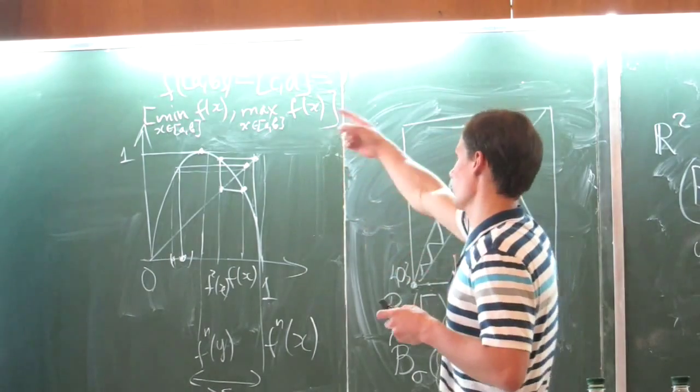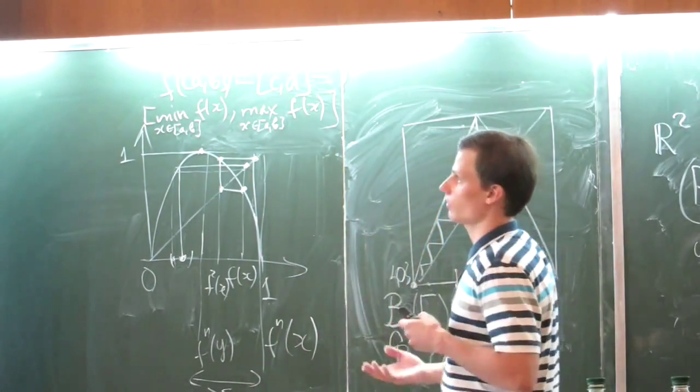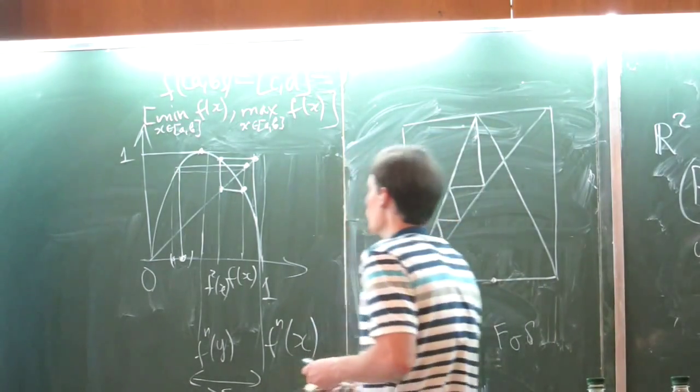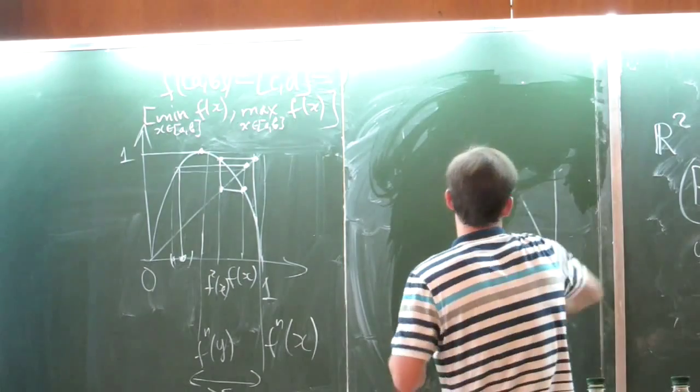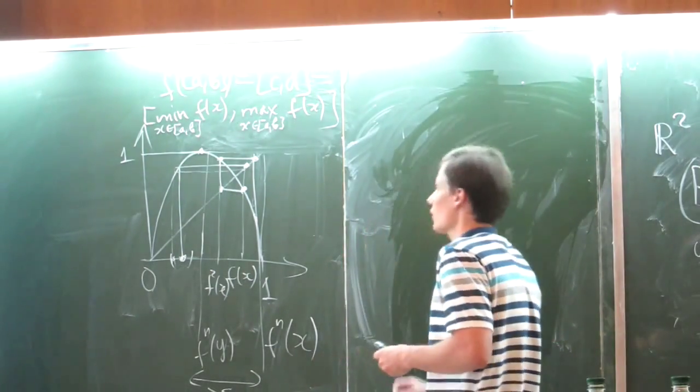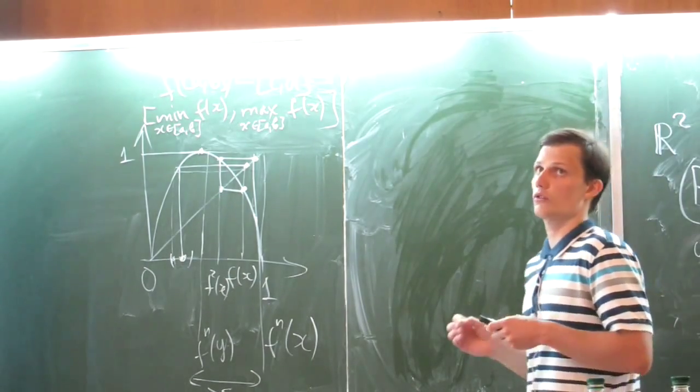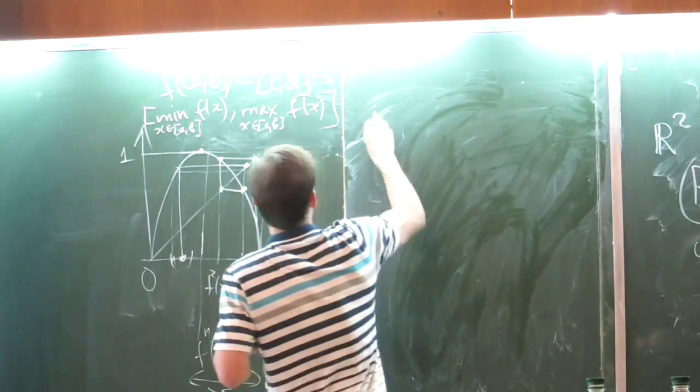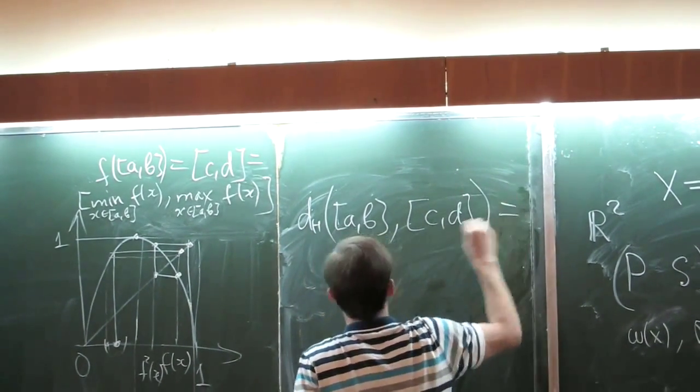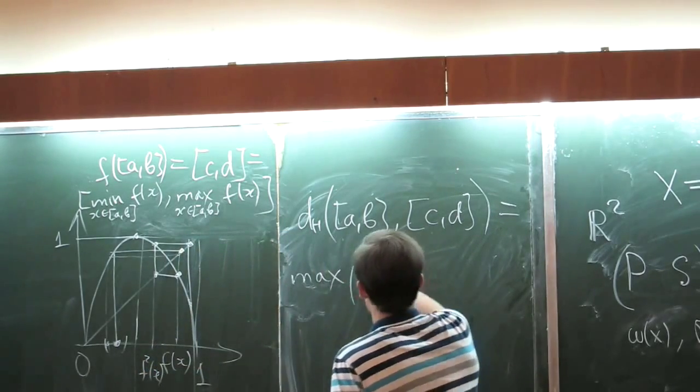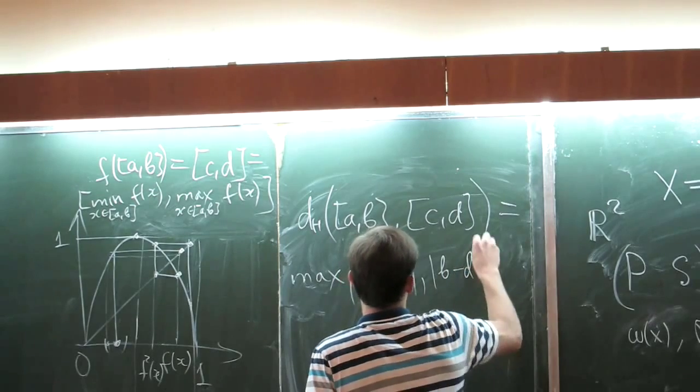If we treat with such segments, with such intervals, we will obtain only intervals and nothing other. Also, we may establish the notion of distance between such segments. For example, we may apply the Hausdorff distance. The general definition of Hausdorff distance is rather complicated, but for segments, the Hausdorff distance is simply the maximum of the spread. It is maximum from the absolute difference between left-hand and the absolute difference between right-hand.